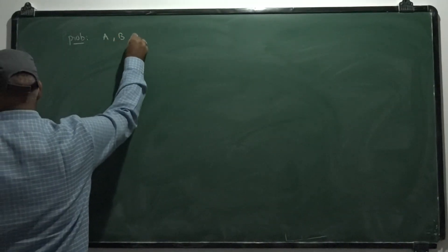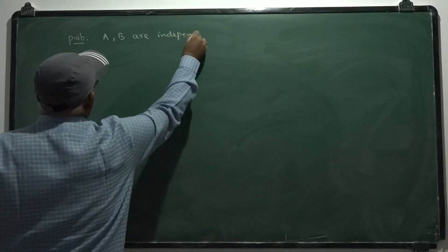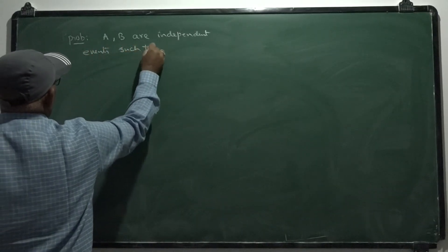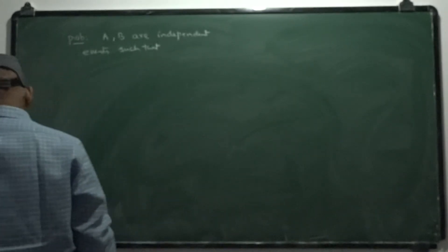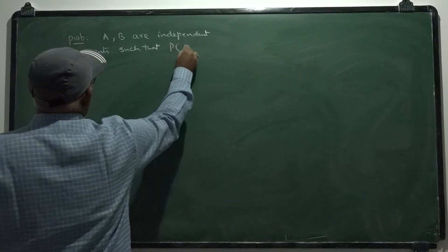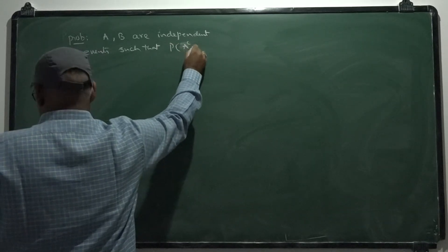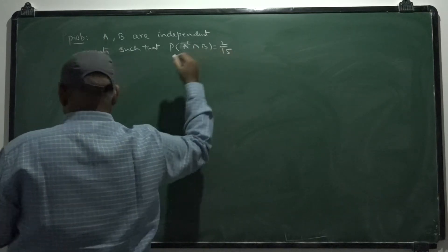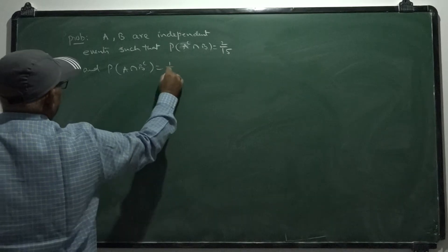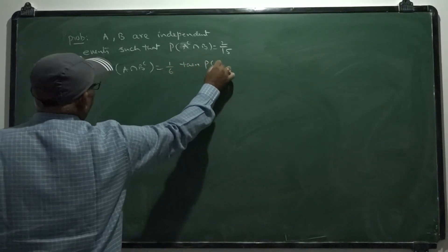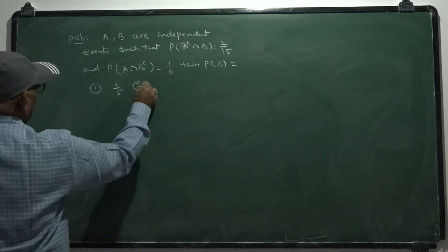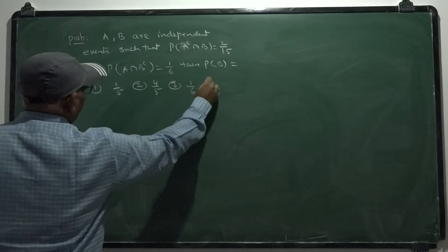A and B are independent events such that probability of A complement intersection B is 2 by 15, and probability of A intersection B complement is 1 by 6. Then find P of B. The options are 1 by 5, 4 by 5, 1 by 6, or 5 by 6.